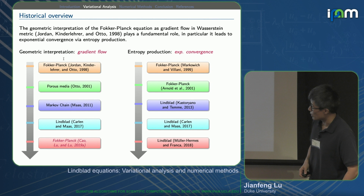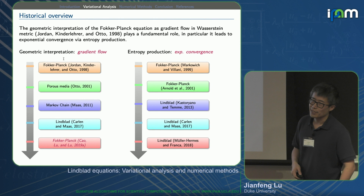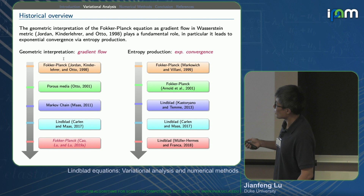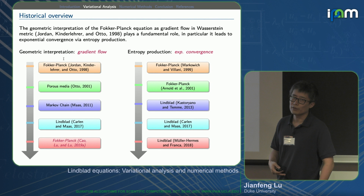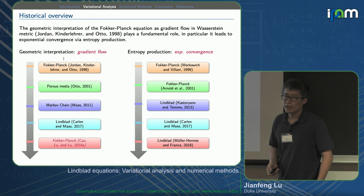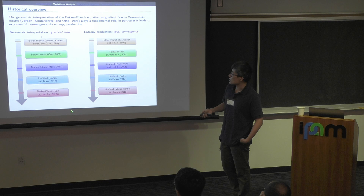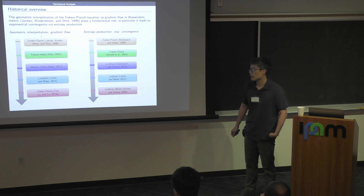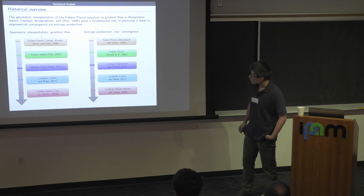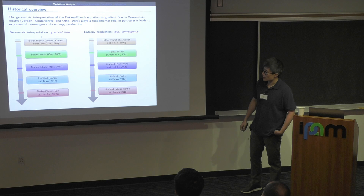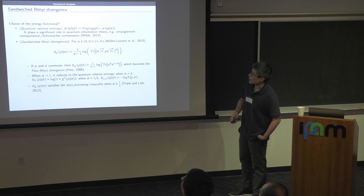This is a review of the history: people realizing gradient flow structures of various equations, starting from the heat equation, Fokker-Planck equation, then more nonlinear equations like the porous medium equation. More related to our work is that Maas, back in 2011, realized that you can also derive the gradient flow structure for discrete Markov chains. In the work by Carlen and Maas, they realized that the quantum master equation — the Lindblad equation — can also be thought of as a gradient flow under a different geometric structure. We are motivated by this work, and we are thinking about the gradient structure of the Lindblad equation.